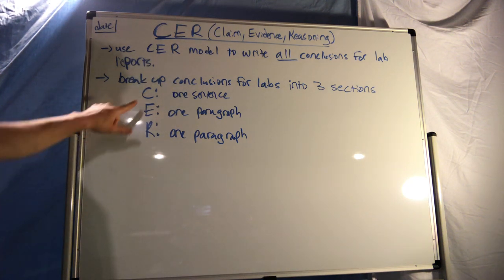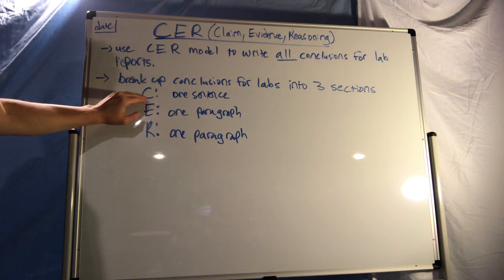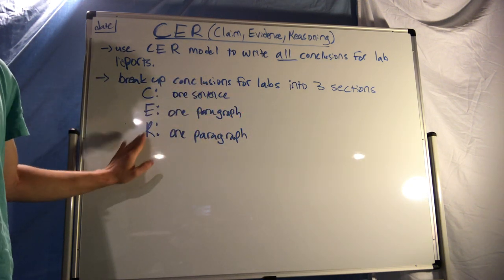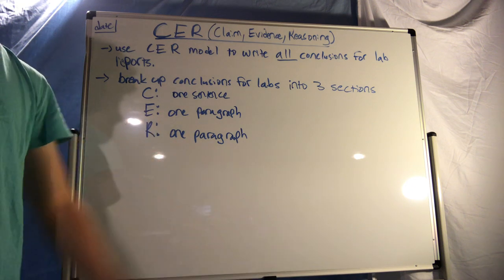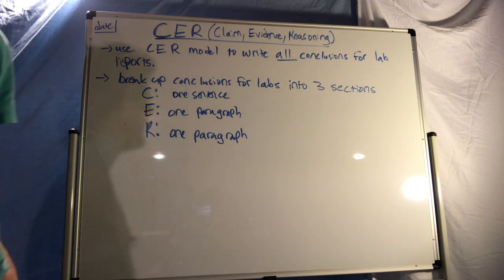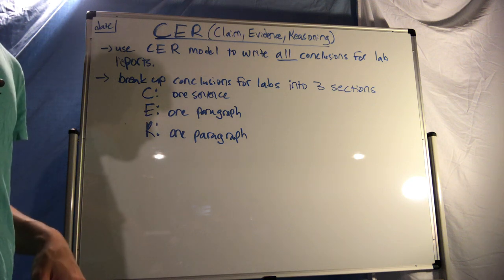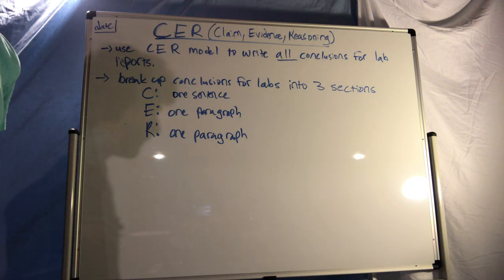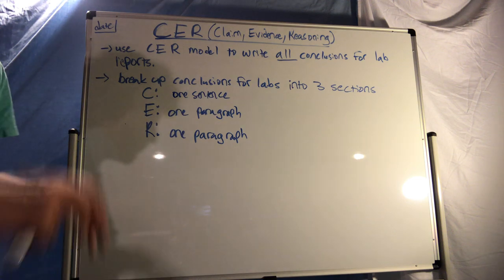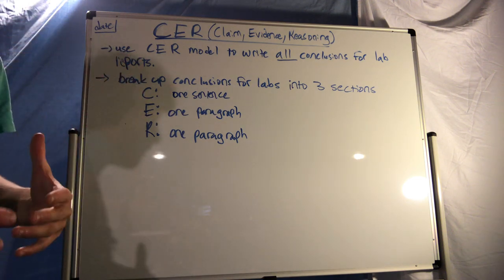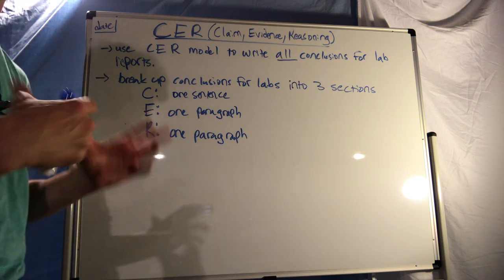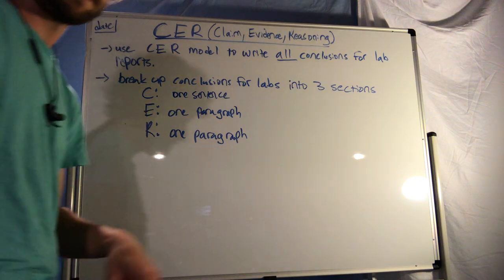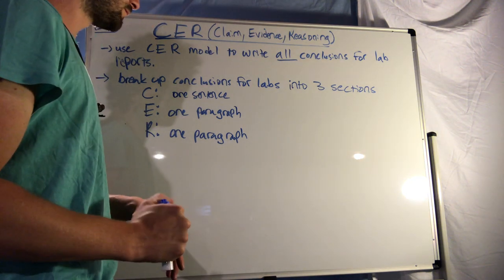When you write a conclusion for a lab report, you're literally going to write 'C:' then one sentence, 'E:' then one paragraph, and 'R:' then one paragraph. They have to be broken up into separate labeled sections. Don't write it all as one whole paragraph where I can't tell what part is the C, what part is the E, and what part is the R.